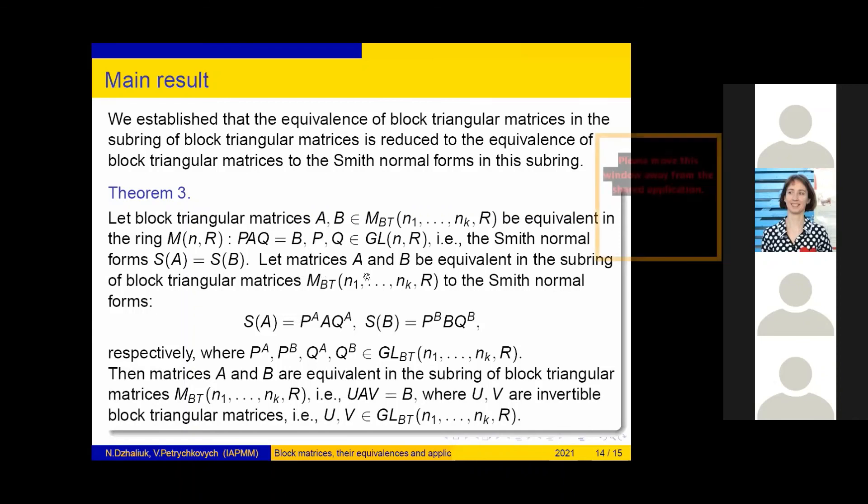Let matrices A and B be equivalent in the subring of block triangular matrices M_BT to the Smith normal forms S(A) and S(B) respectively, where P^A A Q^A = S(A) and P^B B Q^B = S(B), where P, Q are block triangular matrices. Then matrices A and B are equivalent in the subring of block triangular matrices, i.e., UAV = B where U and V are invertible block triangular matrices.